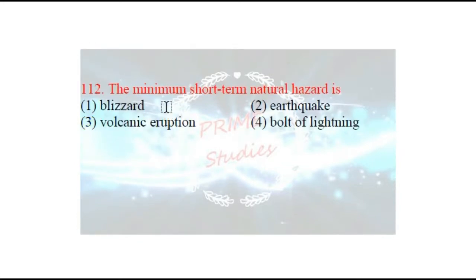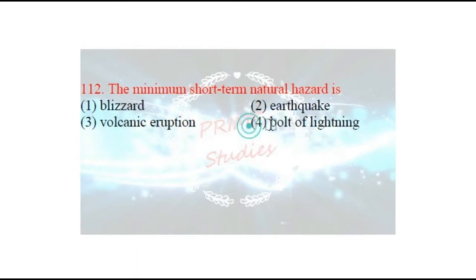Next question: the minimum short-term natural hazard is which? Sabse kam samay ki prakriti aapda kaun si hai in mein se? The options are: blizzard, earthquake, volcanic eruption, or bolt of lightning. The right answer is bolt of lightning — bijli girna sabse kam samay ki prakritic aapda hai.